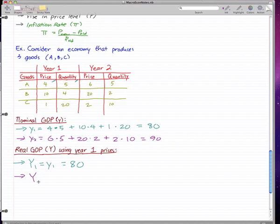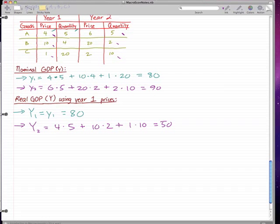For real GDP, we can't do the same deal as in year one because this is year two and the quantity changed. We have to calculate a new value. We take Y2 and we take the price of year one times by the quantity. So it's 4 times 5 plus 10 times 2 plus 1 times 10, that works out to 50.